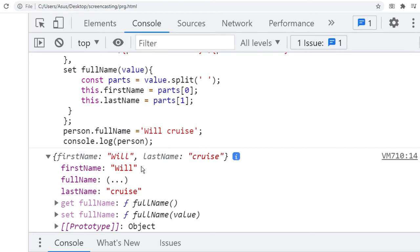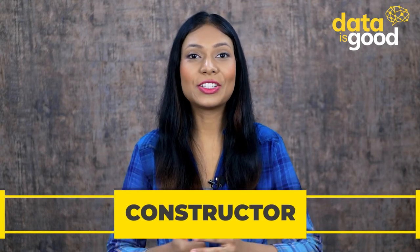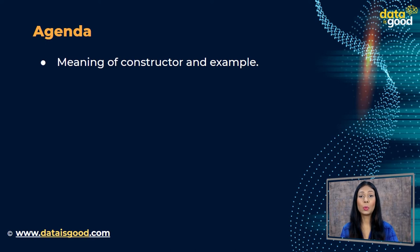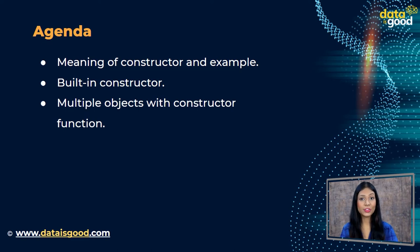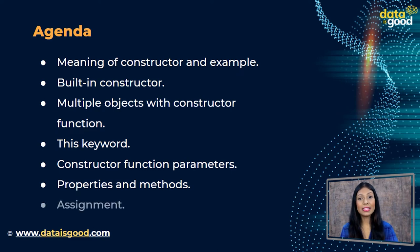We then displayed the object onto the console. JavaScript does not make any compromise with perfection — you just have to do the coding and the rest is JavaScript's responsibility. It will tell you if you make any errors. In today's session we are going to learn constructors in JavaScript. The agenda covers: the meaning of constructor with an example, a list of JavaScript built-in constructors, creating multiple objects with a constructor function, the 'this' keyword, constructor function parameters, adding properties and methods in a constructor, and finally an assignment.